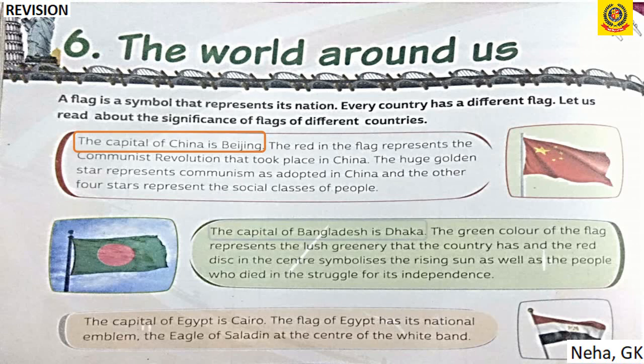The capital of Bangladesh is Dhaka. The green color of the flag represents the lush greenery of the country. The red disc at the center symbolizes the rising sun as well as the people who died in the struggle for its independence.